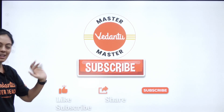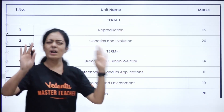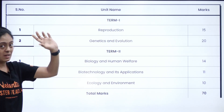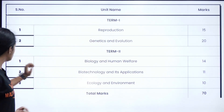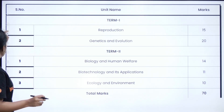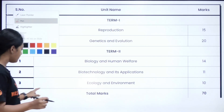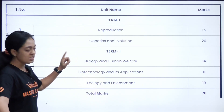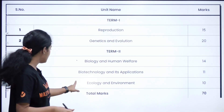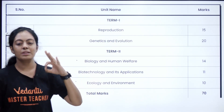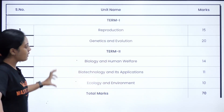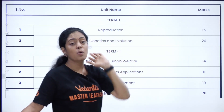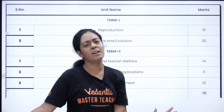Do like, share and subscribe to our channel. Class 12 Biology is going to be very very easy. There are 5 units: Reproduction, Genetics and Evolution, Biology and Human Welfare, Biotechnology and its Application, and Ecology and Environment. Remember, from these units some chapters have been deleted — always keep that in mind for CBSE 12th board exam.